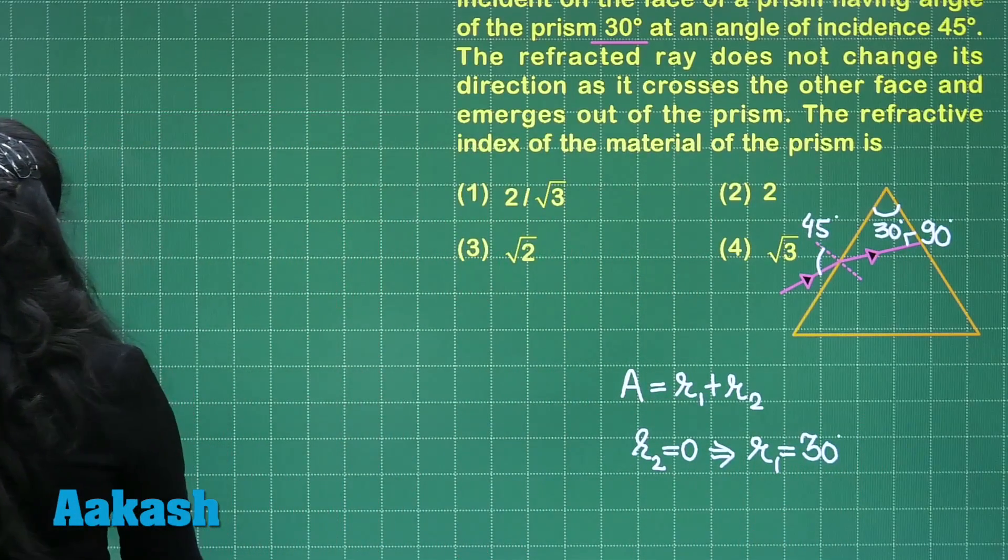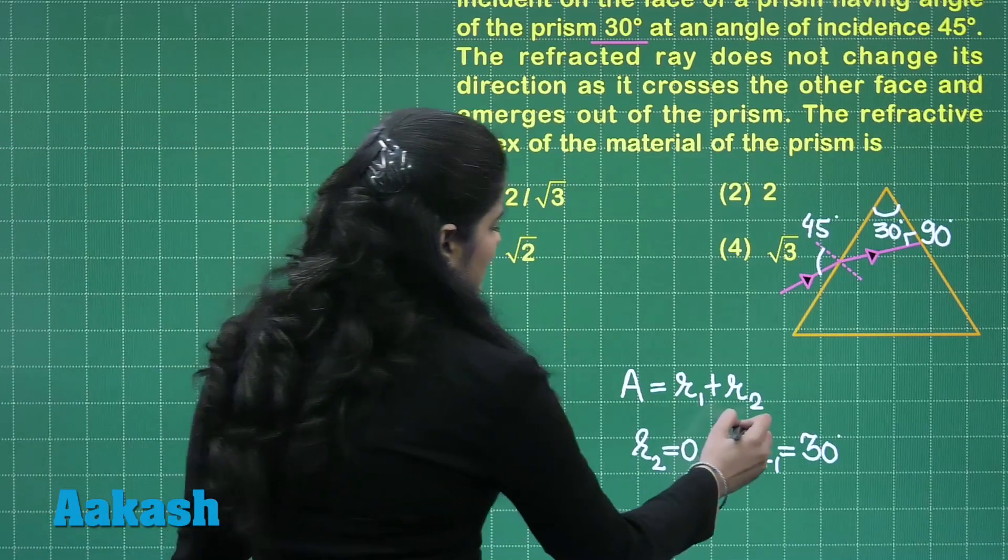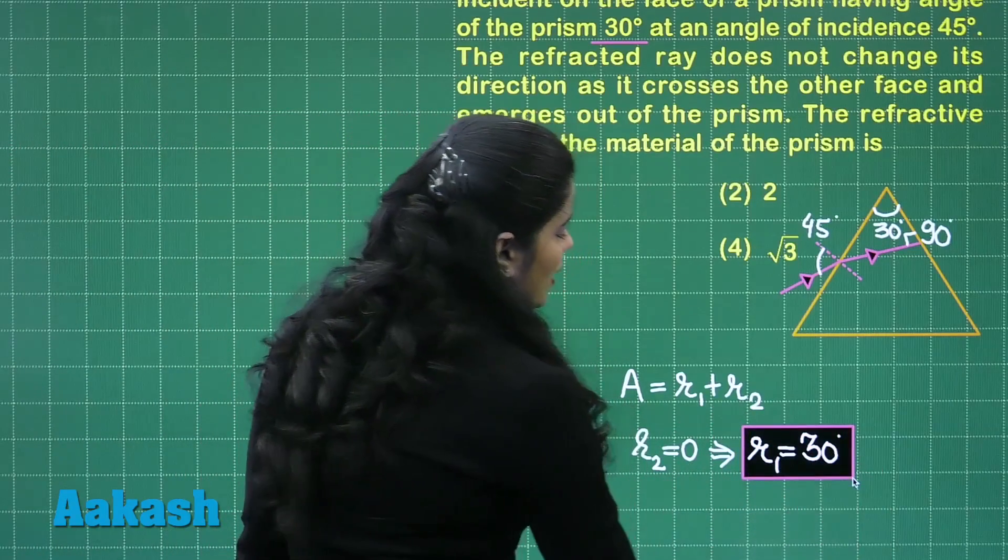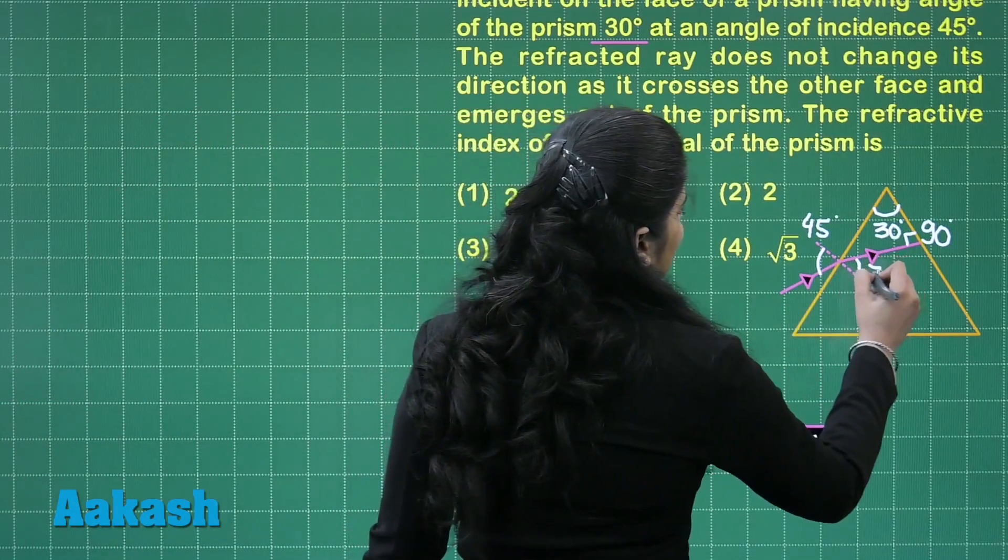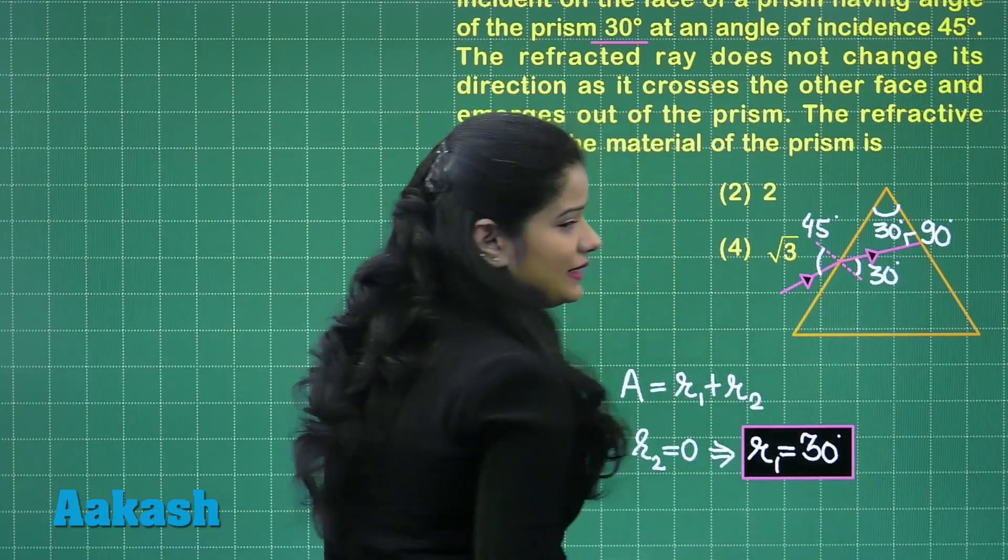So here this R1 comes out to be 30 degrees. I will mark here also that this angle of refraction is 30 degrees.